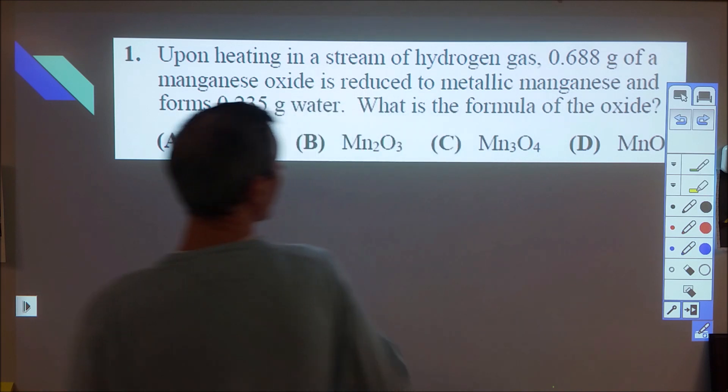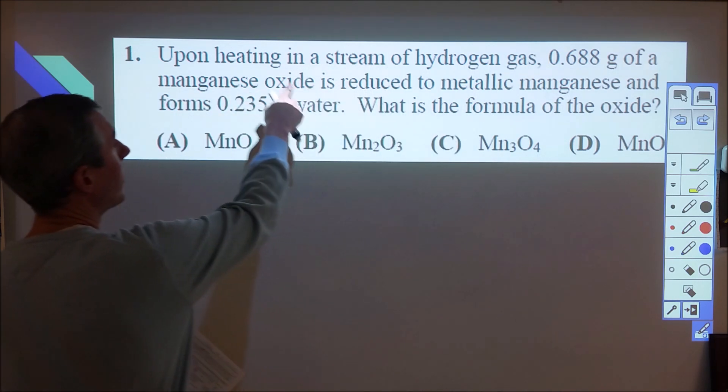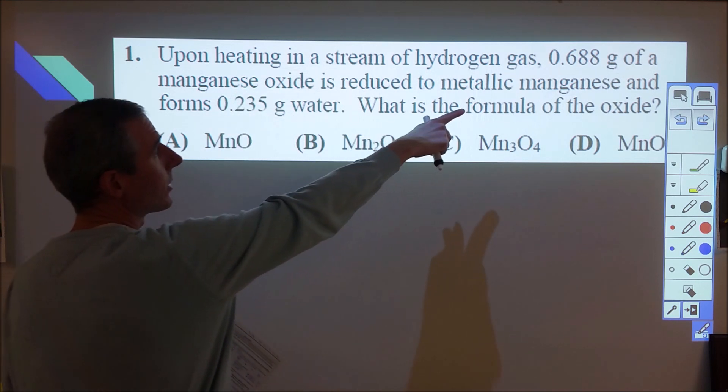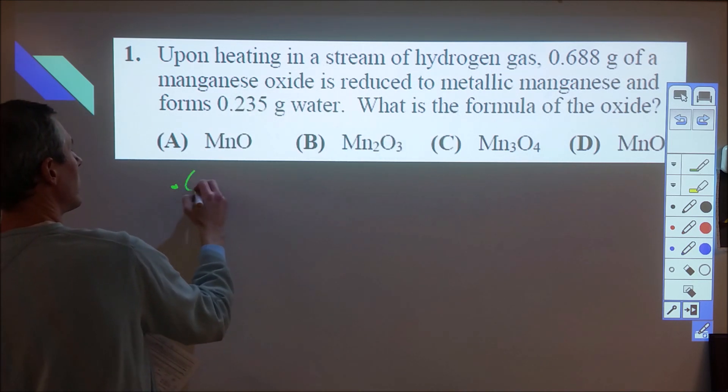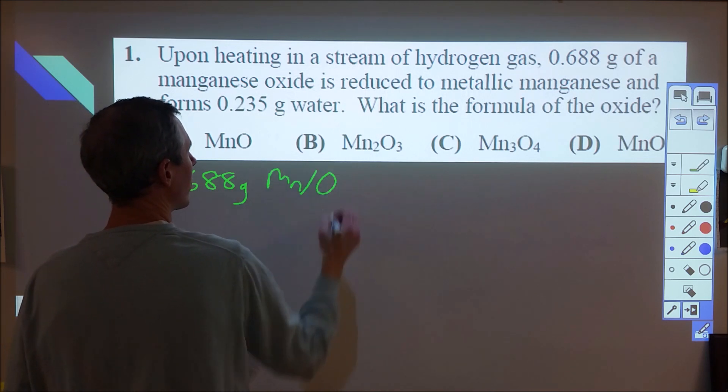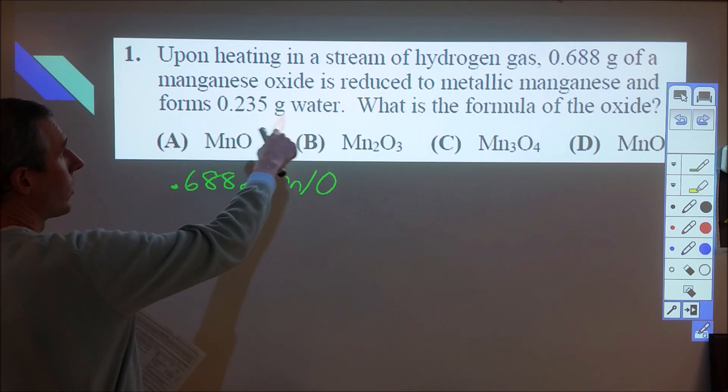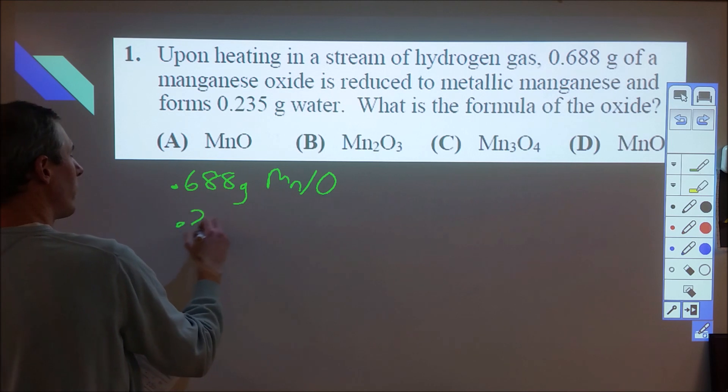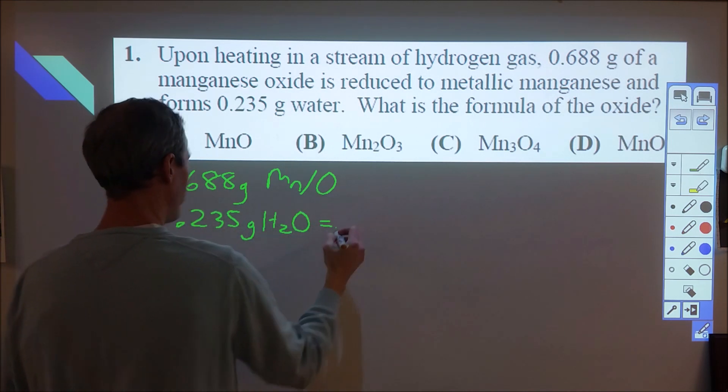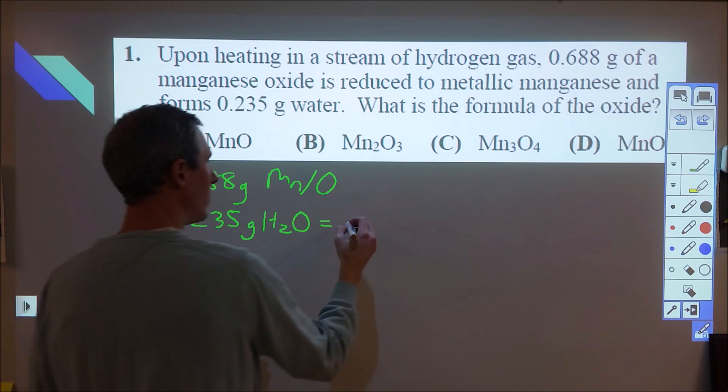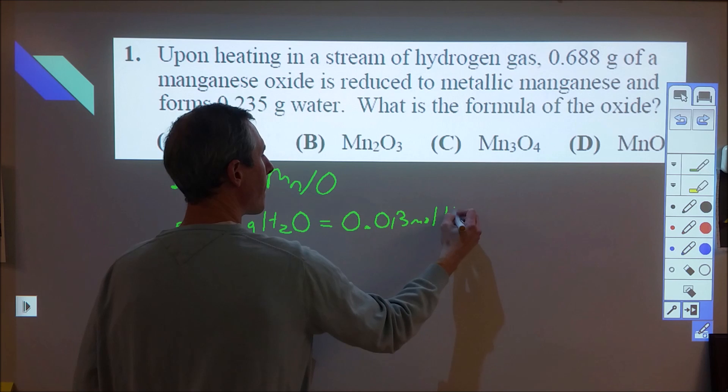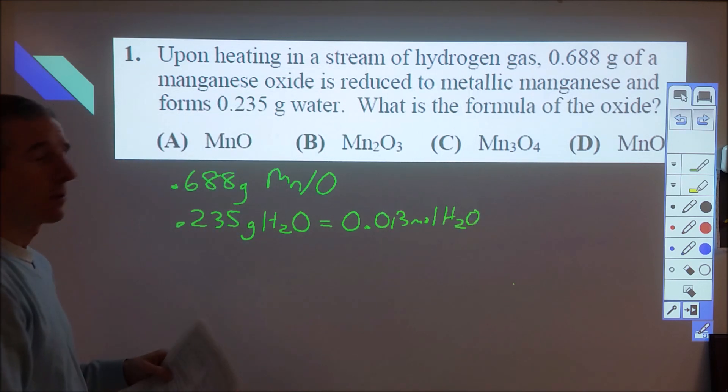In the first one here we have a manganese oxide compound. We're adding stream hydrogen, we're going to make water and manganese metal. So it tells us that there's 0.688 grams of whatever the manganese and oxygen compound is and then it tells us how much water is produced. So we're starting with 0.235 grams of water. I'm going to change that into moles by dividing by 18.02. It comes out to 0.013 moles of H2O, which is also the amount of moles of oxygen.